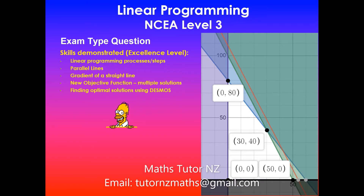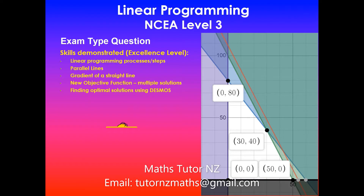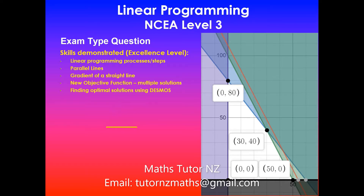Welcome back everyone. In this video we will be looking at a linear programming exam-type question for NCA Level 3 at an excellence level. This is the second part to the problem we did in the previous video. Skills demonstrated will include linear programming processes and steps, parallel lines, gradient of a straight line, using a new objective function that leads to multiple solutions, and finding the optimal solutions using Desmos.